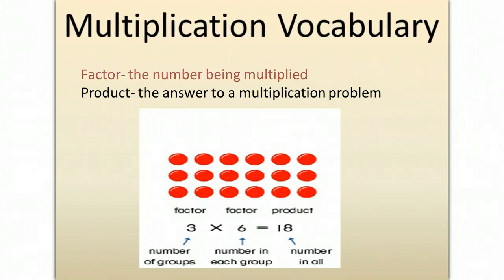A factor is the number that is being multiplied. It's the word we use for the number you multiply. A product is the answer to a multiplication problem.